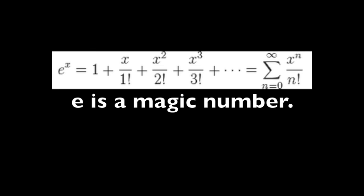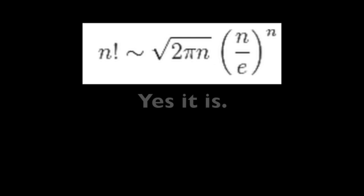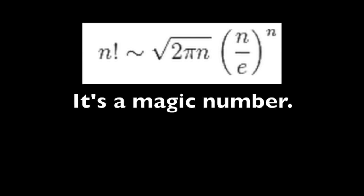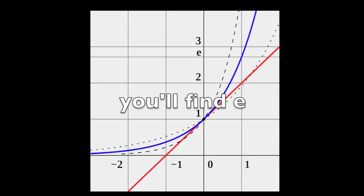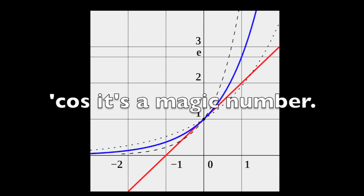E is a magic number. Yes it is, it's a magic number. All across our scientific community, you'll find E, cause it's a magic number.